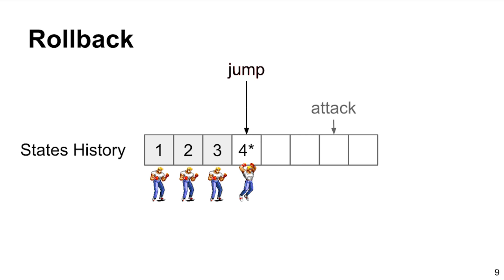So, character jumps at frame 4, time goes until frame 7, in which the attack action took place. That results in the character doing an air kick. That's our new present state.